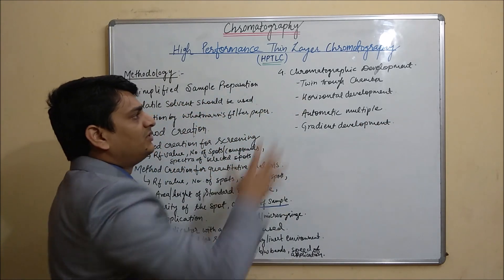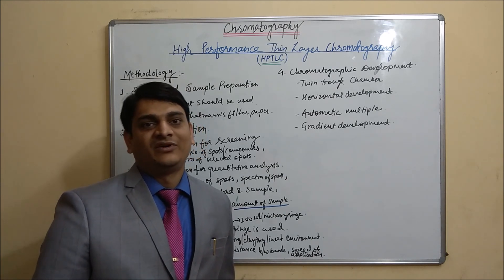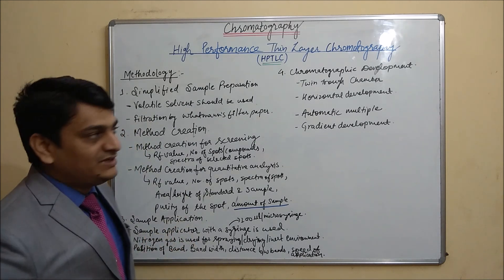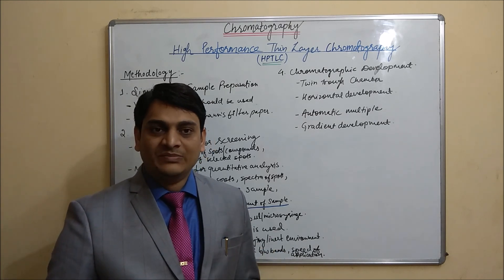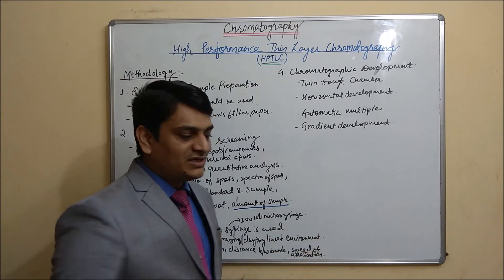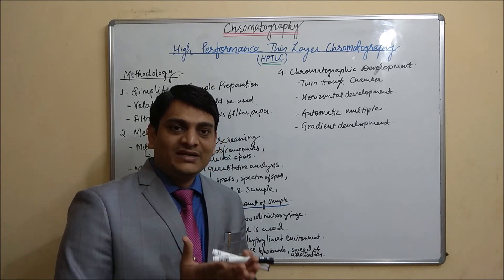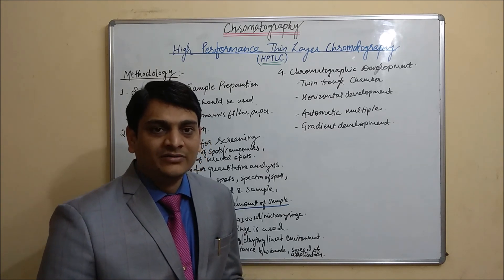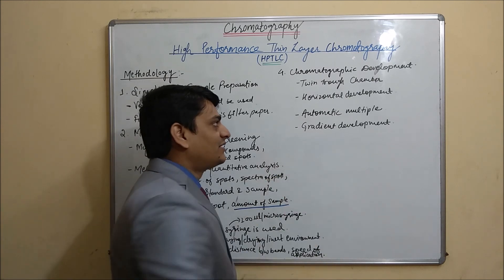The fourth step is chromatographic development. Various HPDLC chambers are used for development. The first is the twin trough chamber, which is divided into two parts. It is most commonly used and is cost-effective because it saves solvent. We can develop our HPTLC plate using this twin trough chamber.